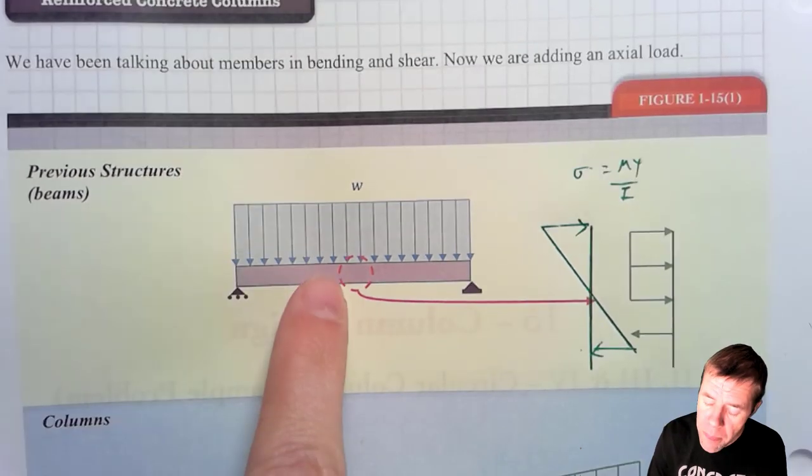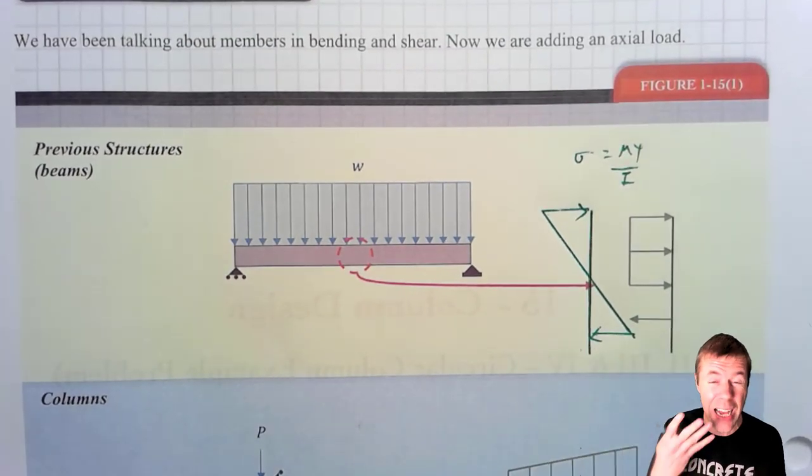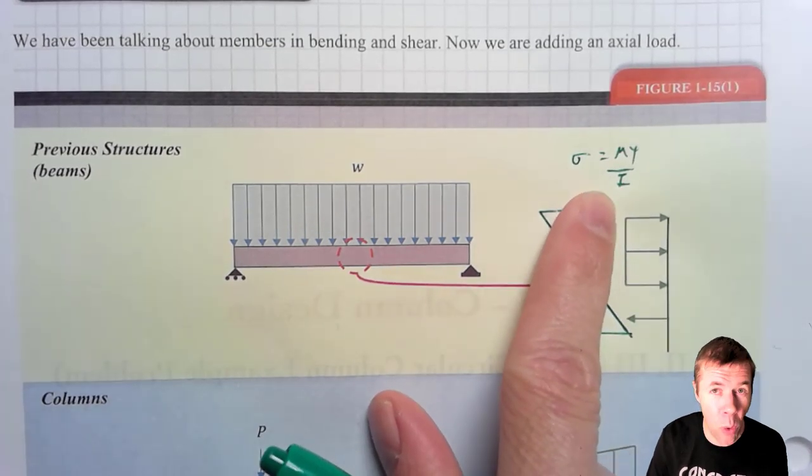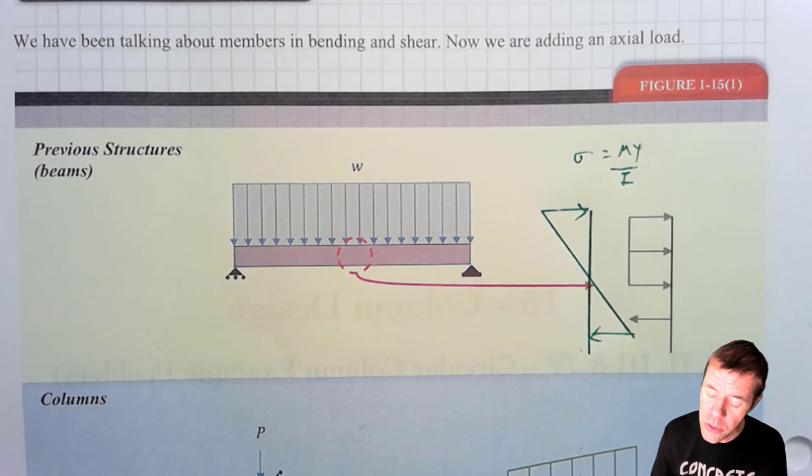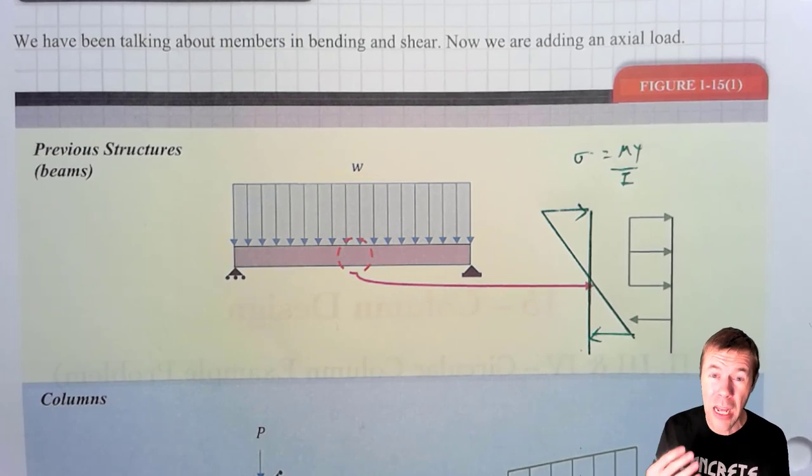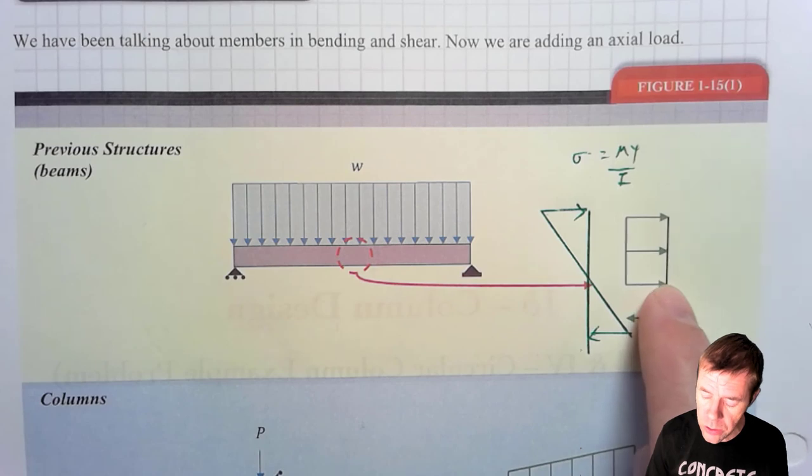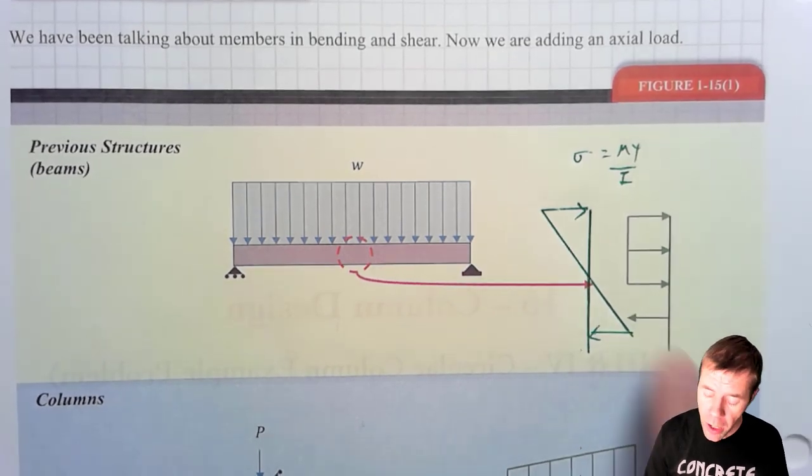But before we get there, members that are loaded like this, the stress diagram, at least in the elastic range before cracking starts to happen, it's just sigma equals MY over I. In the inelastic range, once things start to crack a whole lot and we get near failure, they look something like this. We have the Whitney stress block at the top and this deal is yielded at the bottom.